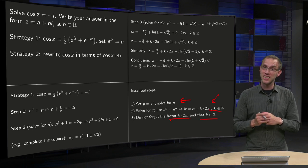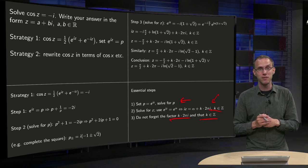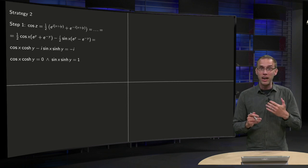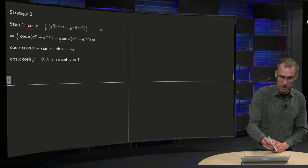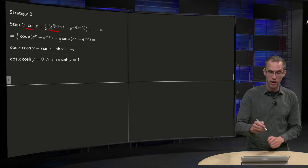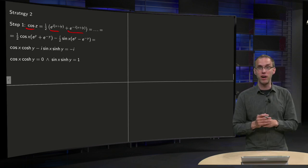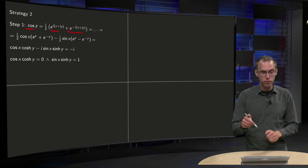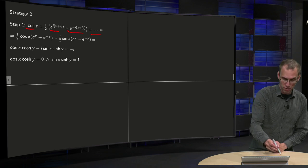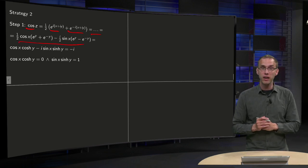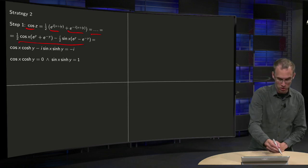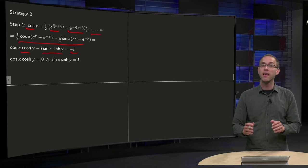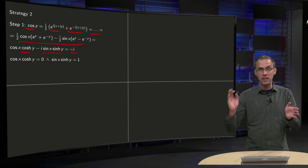Now we move on to the second strategy for the same exercise. You rewrite cosine z by setting z equals x plus iy, expanding e^(i(x+iy)) and e^(-i(x+iy)), applying Euler's formula through several steps, and you recognize that the result is cos(x)·cosh(y) minus i·sin(x)·sinh(y) equals minus i.